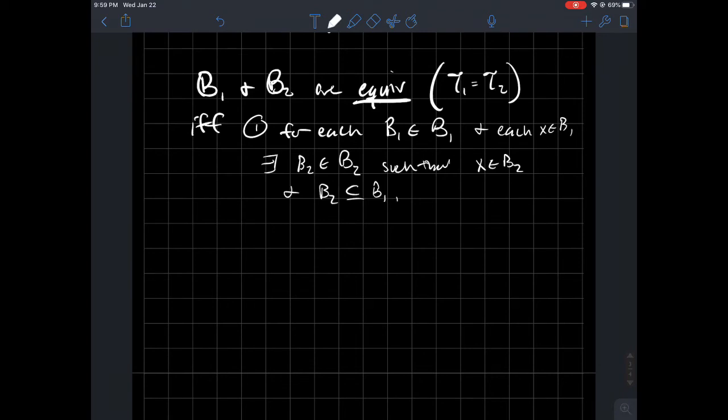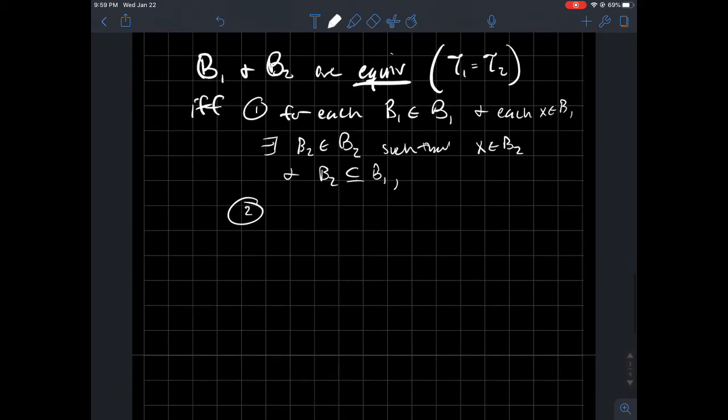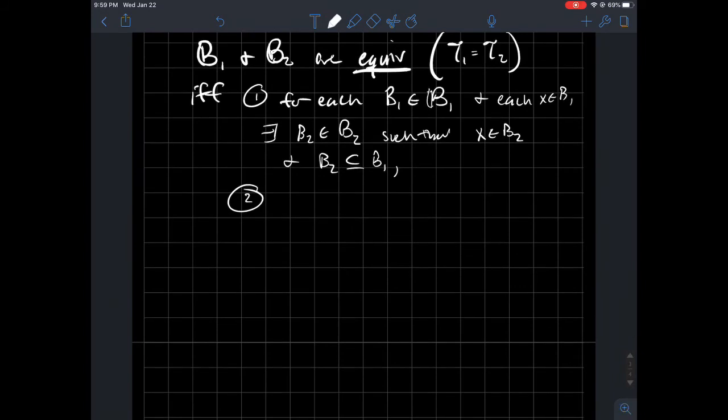And the other thing that should happen is that you should be able to reverse the roles of B₁ and B₂ of the bases and have the same thing happen. So I'm just going to write that down very quickly. So (2) for each basis element, for each B₂ from fancy B₂ and X that's in B₂ now, so each X in B₂, what should happen? There should be someone named B₁ from the first basis, with X in B₁, and now that B₁ should be contained in this one as well.